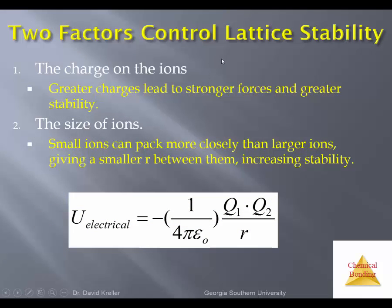Now let's take a quick look at the stability of lattices — how stable they are, or how difficult they are to break up. Two factors control this. First, the charge on the ions, as seen in the equation for electrical potential energy with Q1 and Q2: the larger the charges, the more stable the lattice. Lattices with +2 or −2 charges on the ions tend to be more stable than those with just +1 or −1 charges. The second factor is the size of the ions — the separation R between two charged objects. The smaller the R, the larger the stability. Lattices formed from small ions can pack more closely, increasing stability.